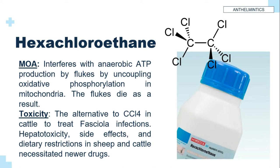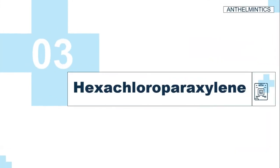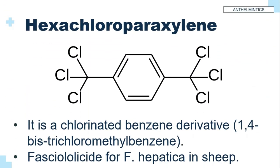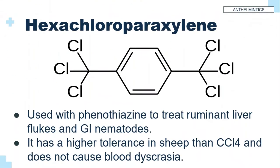Its toxicity: it is an alternative to carbon tetrachloride in cattle to treat Fasciola infections. Hepatotoxicity, side effects, and dietary restrictions in sheep and cattle necessitate newer drugs. The next example is hexachloroparaxylene. Hexachloroparaxylene is a chlorinated benzene derivative. It is a fasciolicide for Fasciola hepatica in sheep. It is used with phenothiazine to treat ruminant liver flukes and GI nematodes. It has higher tolerance in sheep than carbon tetrachloride and does not cause blood dyscrasias.